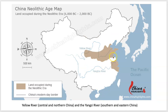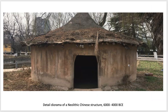Most communities were around the Yellow River and a little around the Yangtze River, which makes perfect sense because the river provides water to sustain a civilization, grow crops, and so forth. This is a recreation of a Chinese structure from the Neolithic time period.